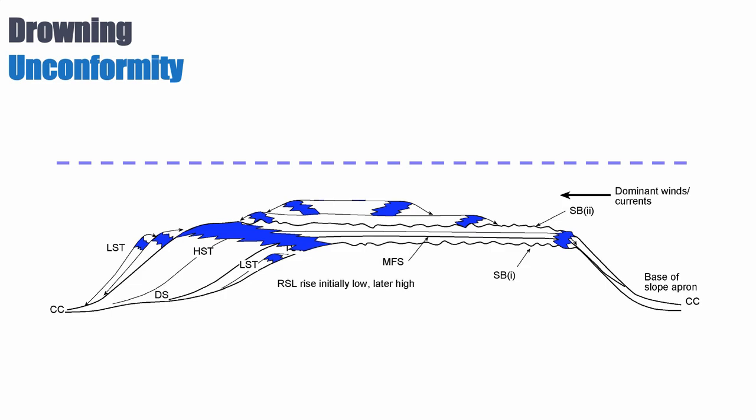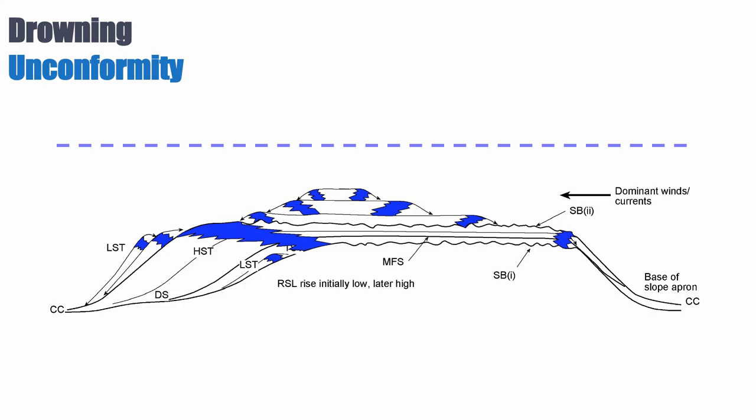And the only way these carbonates can survive for a while is by retreating to the higher ground and producing less sediment. So you end up with each one of these cycles being smaller and smaller until you reach the final cycle where you only have production at the apex of what is left of that carbonate system, and at that point the carbonates give up because there's no longer enough light penetrating to allow them to survive.